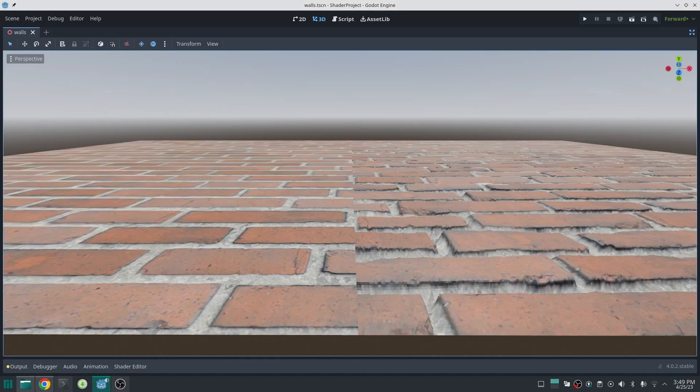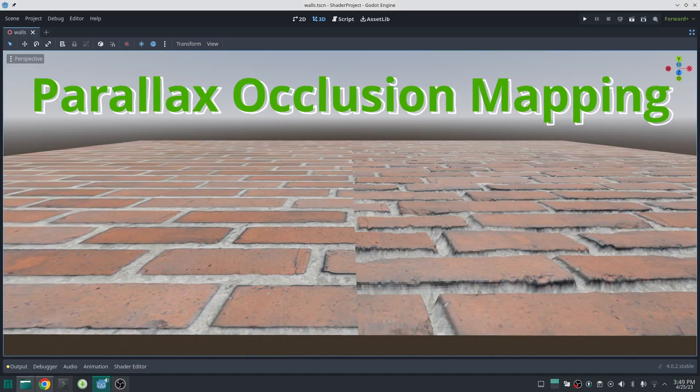Today we are going to explore a shader technique called parallax occlusion mapping. This technique is used to add more depth to your texture beside normal map and without adding any extra geometry.